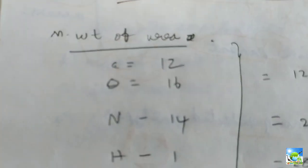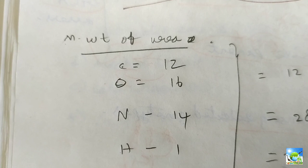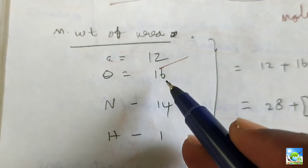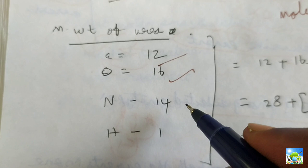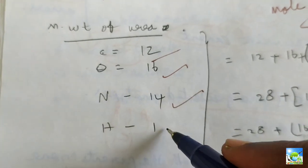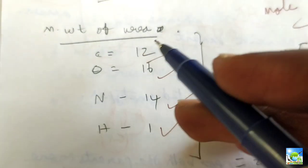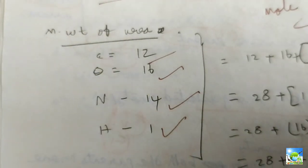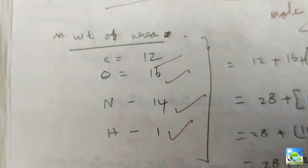I have written here the molecular weight of carbon is 12. The molecular weight of oxygen is 16. Molecular weight of nitrogen is 14. The molecular weight of hydrogen is 1. These are the molecular weights of different elements that are present in urea. From this we can calculate the molecular weight of urea.